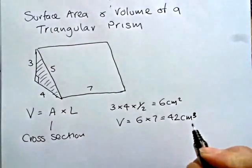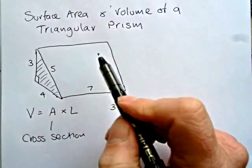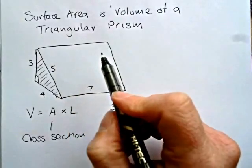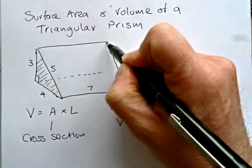Now the surface area is quite a bit harder really, because if you look at this prism, although we're looking at it front on, it's got a lot of surfaces. So let's just think how many surfaces it's got and what the dimensions of each of them are.